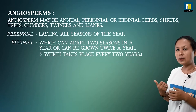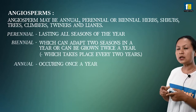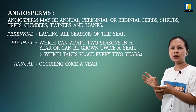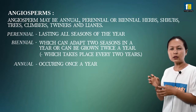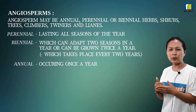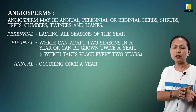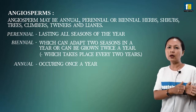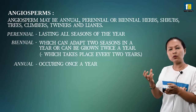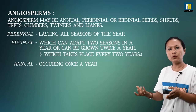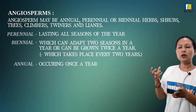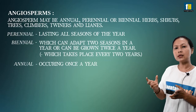It can also be annual, completing its life cycle in one season. For example, wheat is a winter crop — it is an annual plant. Similarly, mango plants flower and fruit seasonally, so they also follow an annual flowering season.